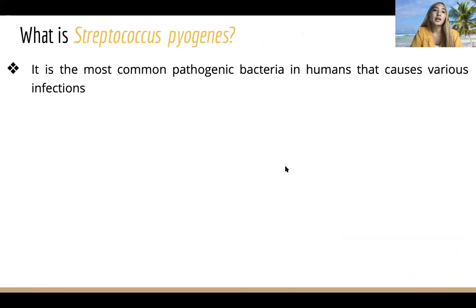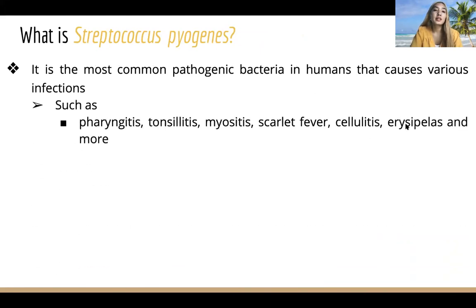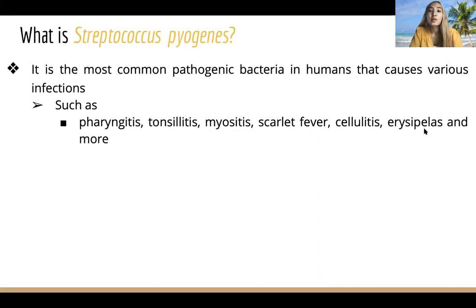Streptococcus pyogenes is the most common pathogenic bacteria in humans and causes various infections, such as pharyngitis, tonsillitis, myositis, scarlet fever, cellulitis, erysipelas, and many more.